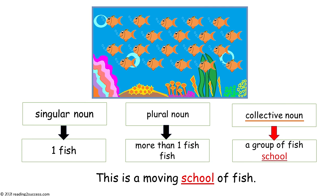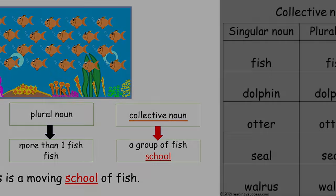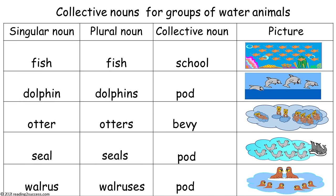Now we're going to have kids learn the next category: collective nouns for water animals. In our example, the singular noun is one fish, the plural noun is more than one fish, also called fish, and the collective noun for a group of fish is school. The collective noun for dolphins is pod, for otters is bevy, and for seals and walruses is also pod.